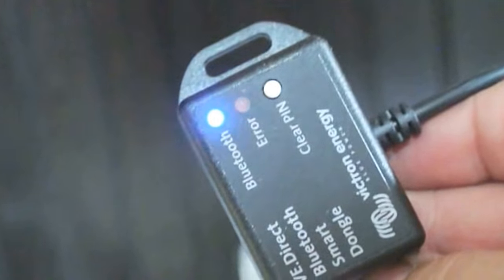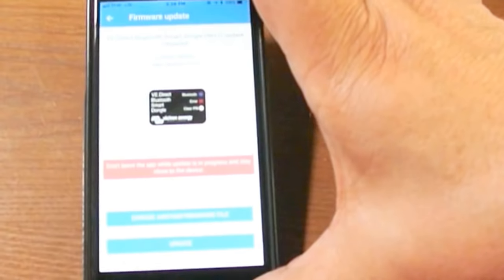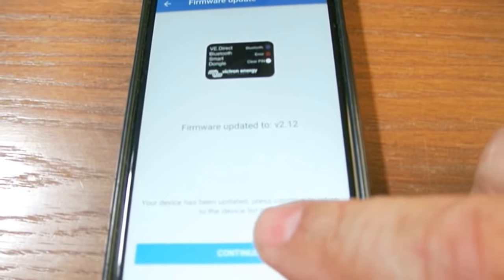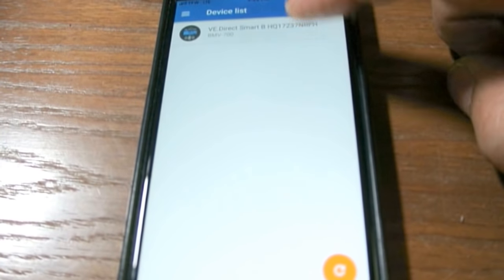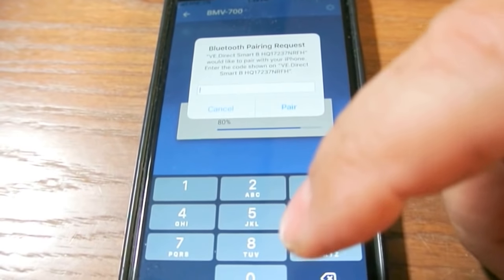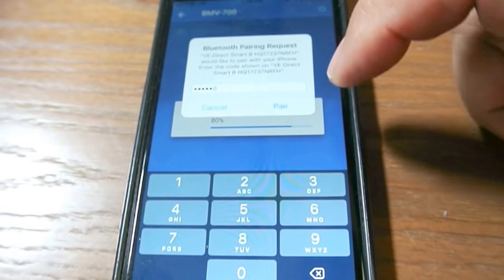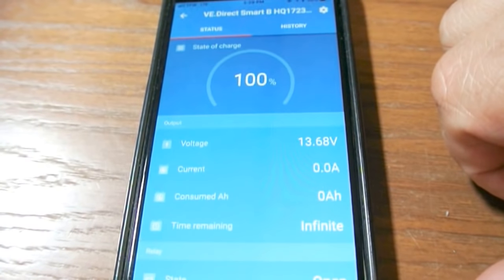Now I have the Bluetooth plugged in, we're going to pair it. When we fire up the app it found it. It says we have to do an update. Okay, so let's continue. It shows that it sees the BMV 700. The default pairing is six zeros, and by the way you can change the code and they recommend you do that. There you go.